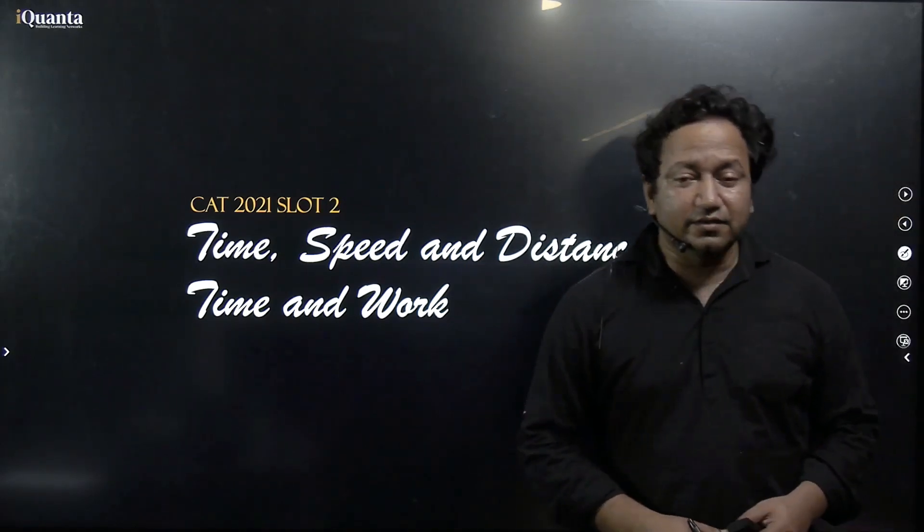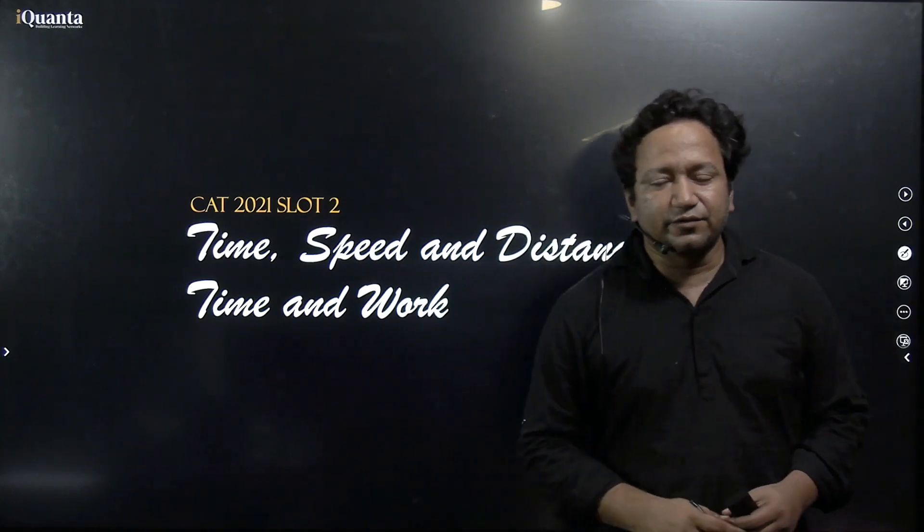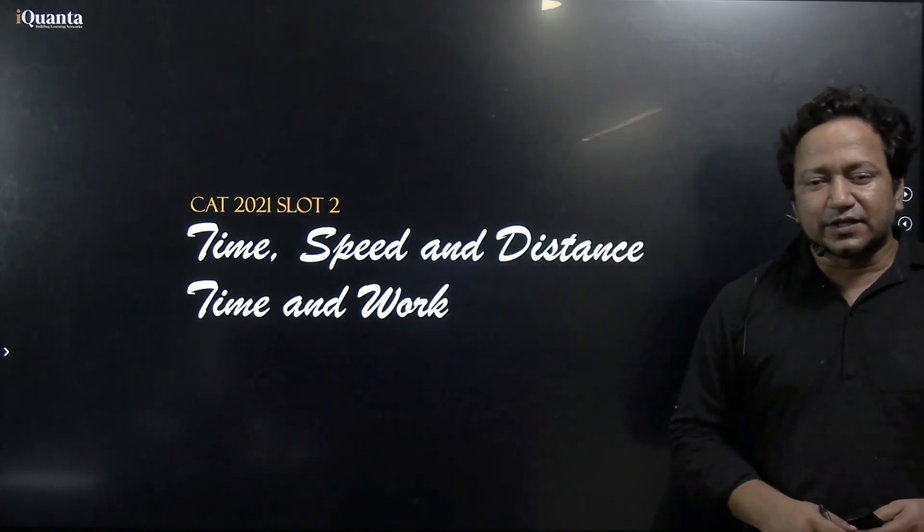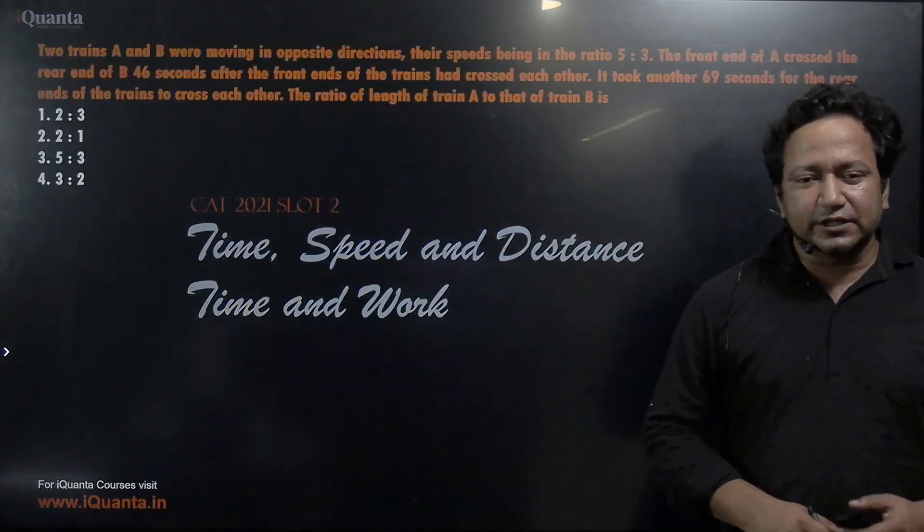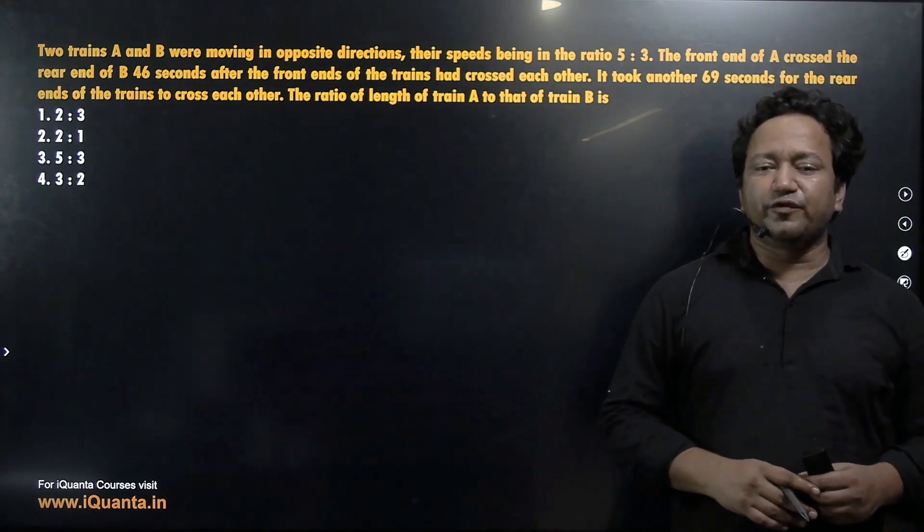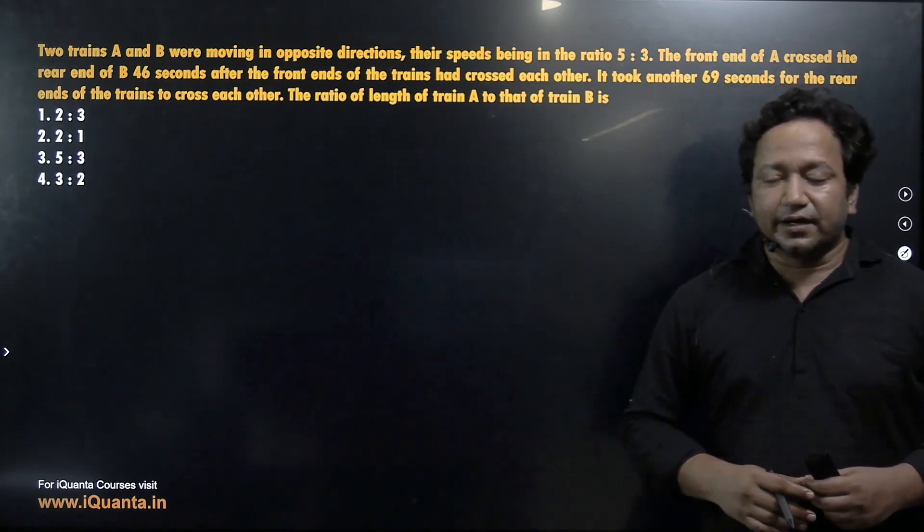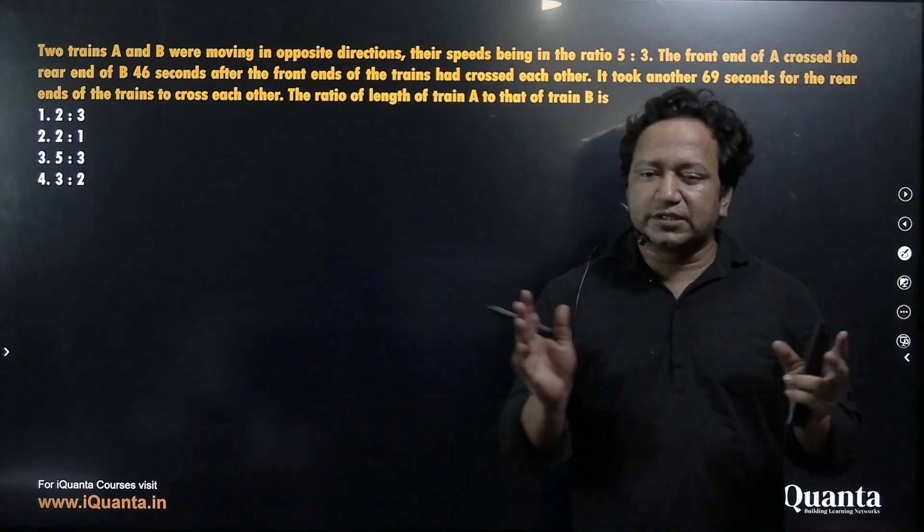Hello and welcome to iQuanta. Today I'll be discussing two questions from time, speed and distance and time and work from CAT 2021 slot 2. The first question is on trains. It goes like this: Two trains A and B were moving in opposite directions, their speeds being in ratio 5 is to 3.